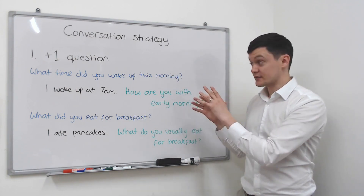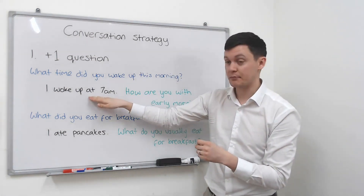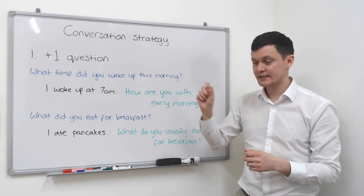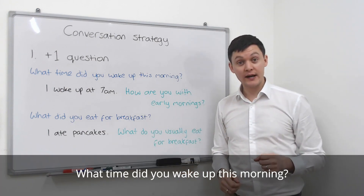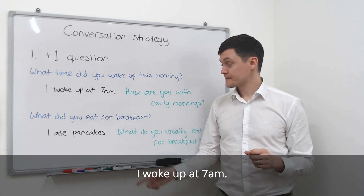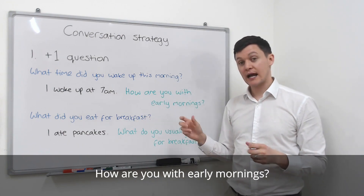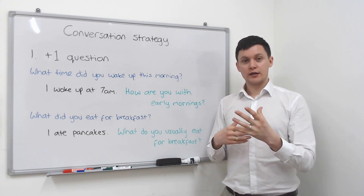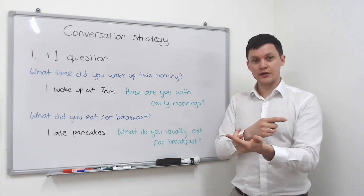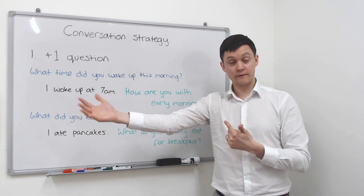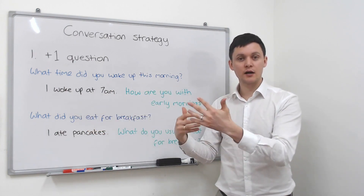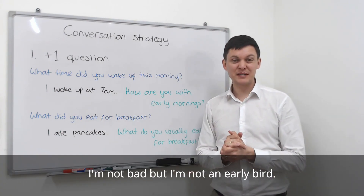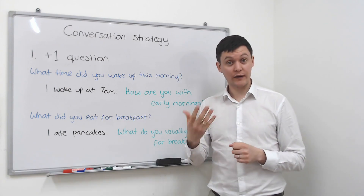As you can see here, the scenario is the same — the same question and the same basic answer — but we're changing the plus one information to a question. What time did you wake up this morning? I woke up at seven. How are you with early mornings? That means: How do you feel about early mornings? So you're giving an answer and flipping it back to your conversation partner so they can answer on a related topic. For example: I'm not bad but I'm not an early bird.